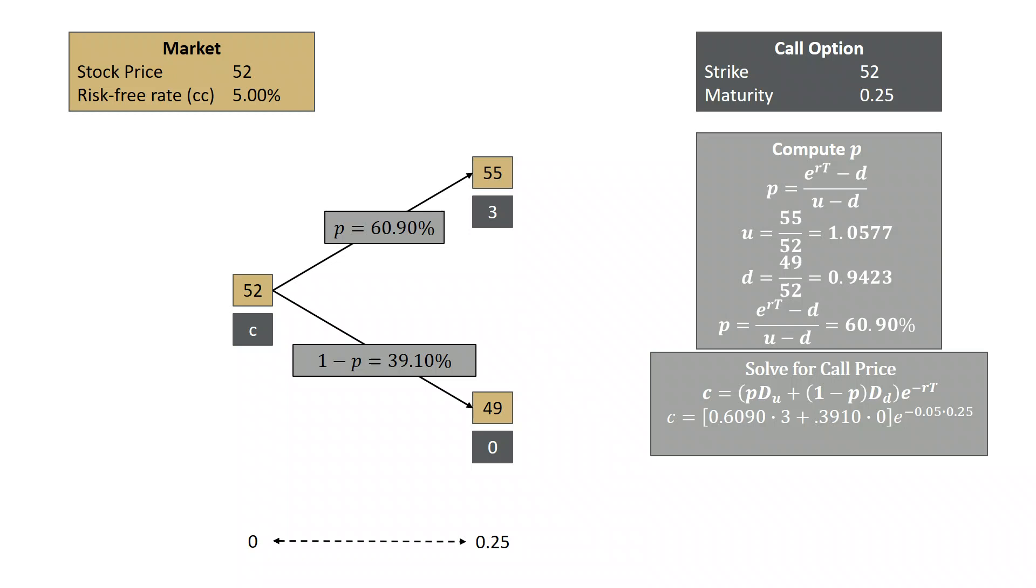So C equals 0.6090 times 3, plus 0.3910 times 0, all of that times E to the minus 0.05, the risk-free rate, times 0.25, and we find C equals 1.8043.